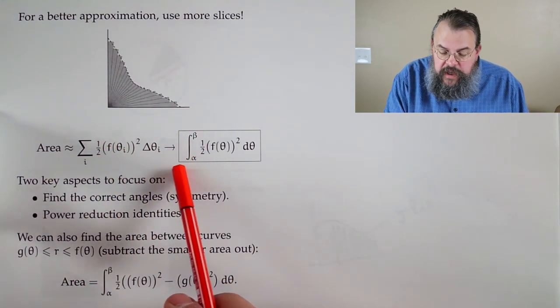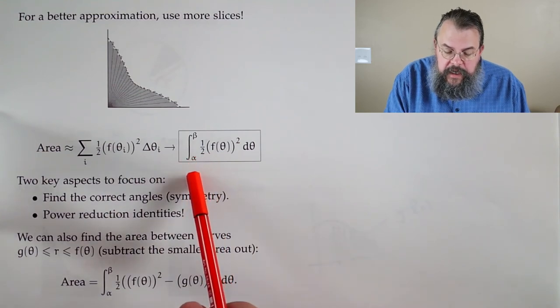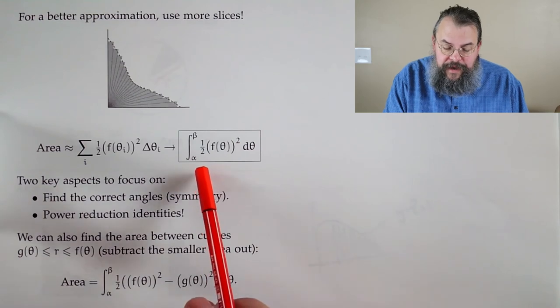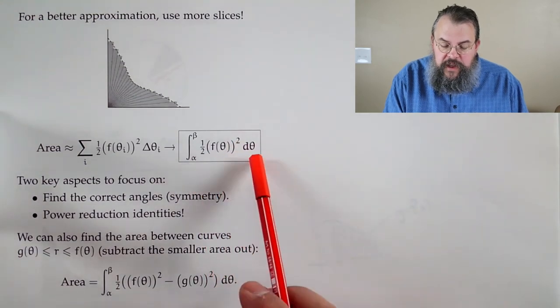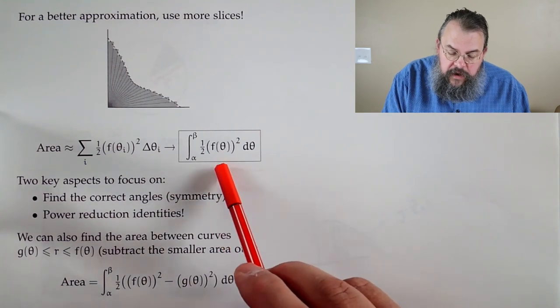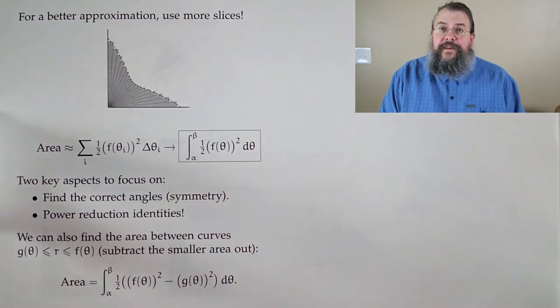So, what does this become? Well, it becomes adding up, starting angle to finishing angle. One half, function squared, d theta. And so, the key here, this one half, r squared. Right? That's what that f of theta is. That's r.